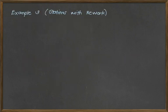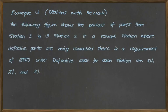Now, let's have another case. For example 3, we have stations with rework. Now, for examples 1 and 2, the operation was a straight line. It didn't go anywhere else. Now, this time, for example 3, there's rework happening. Now, for the example, the following figure shows the process of parts from station 1 to 3. Station 2 is a rework station, where defective parts are being reworked. There is a requirement of 5,000 units. The defective rates for each station are 10%, 5%, and 3%, respectively.